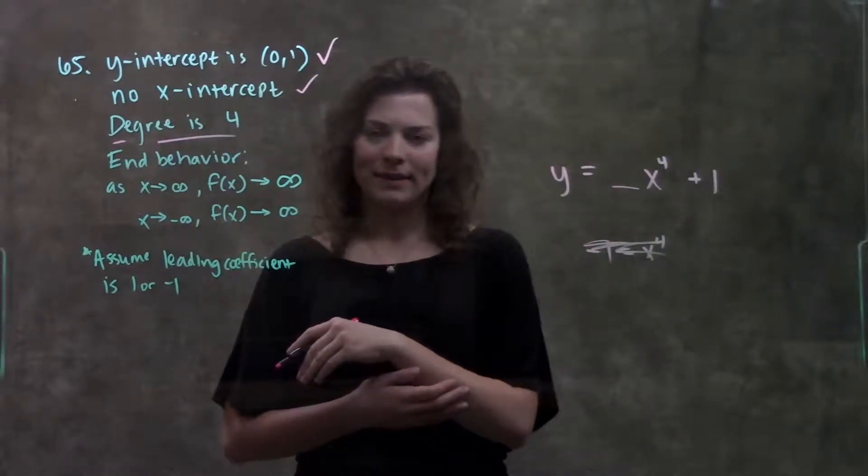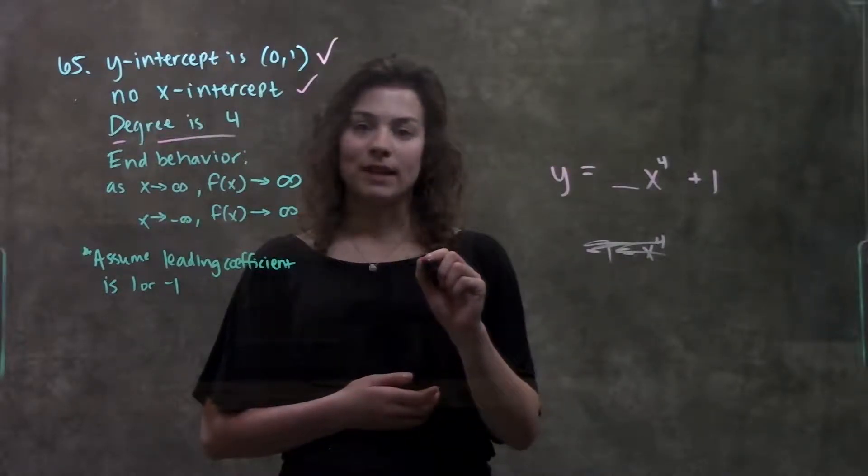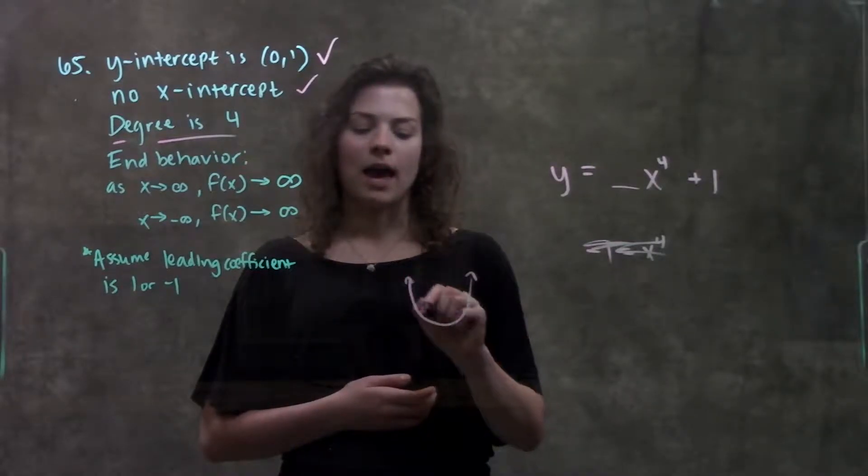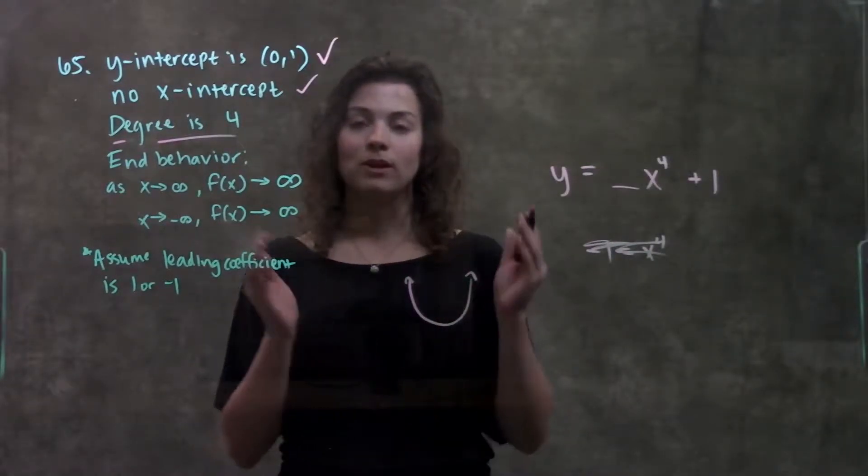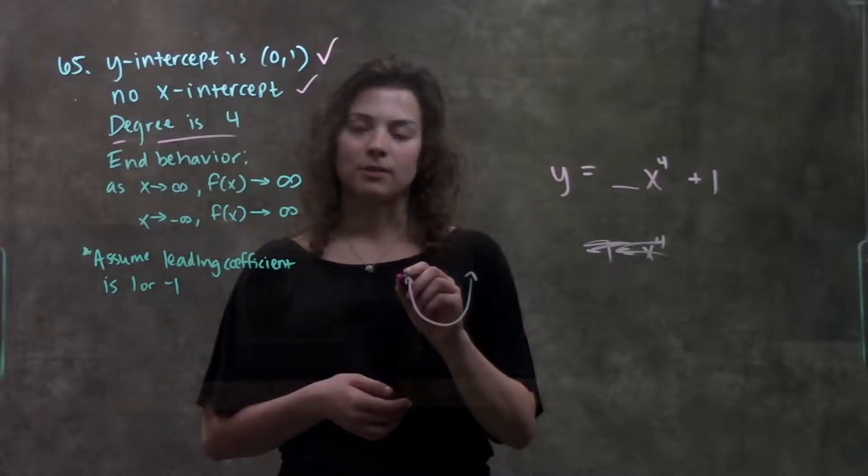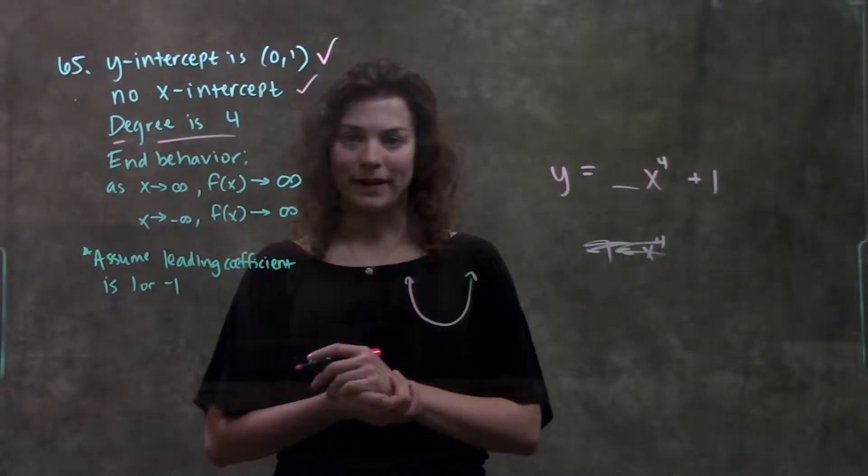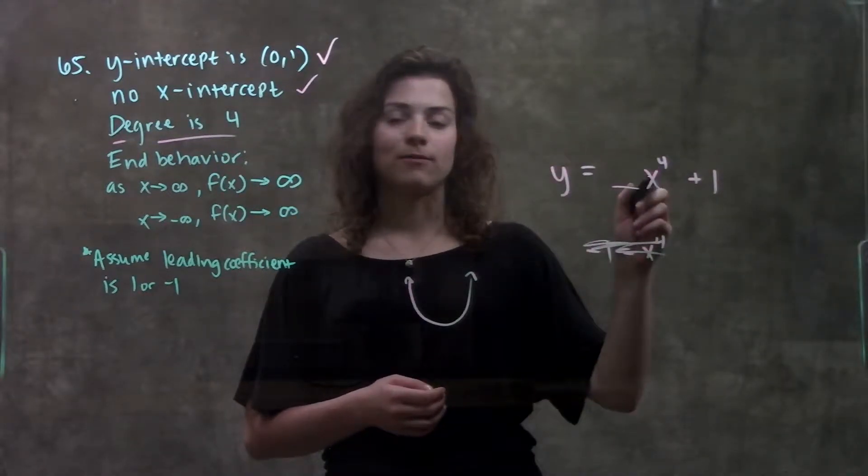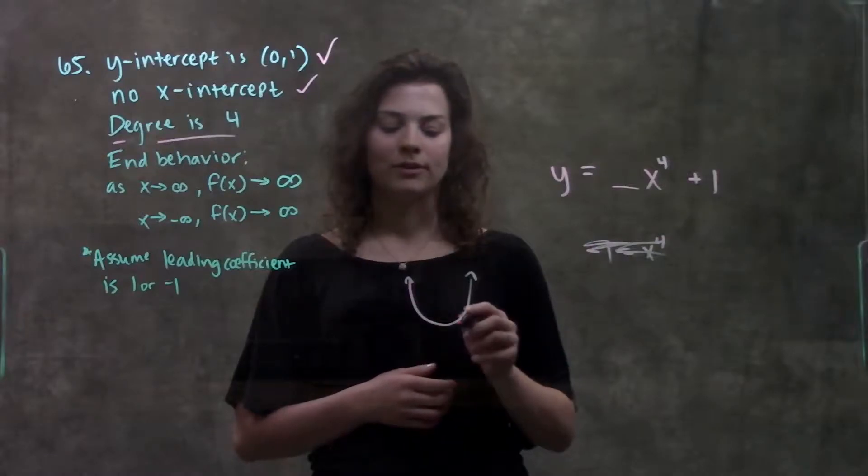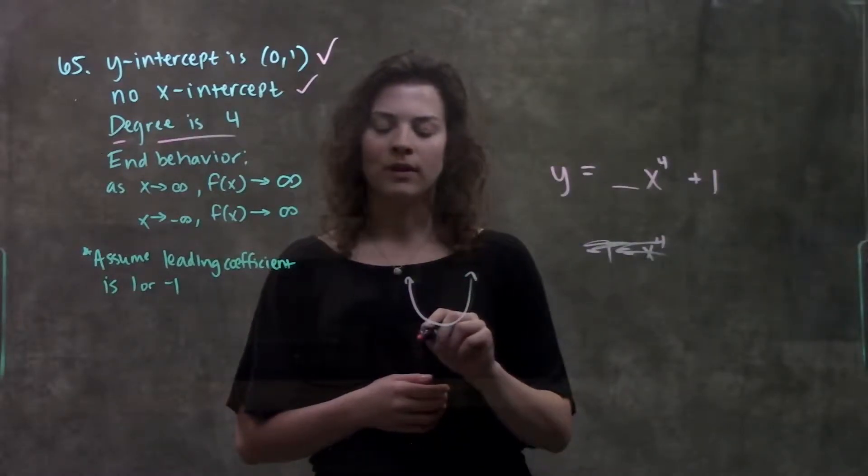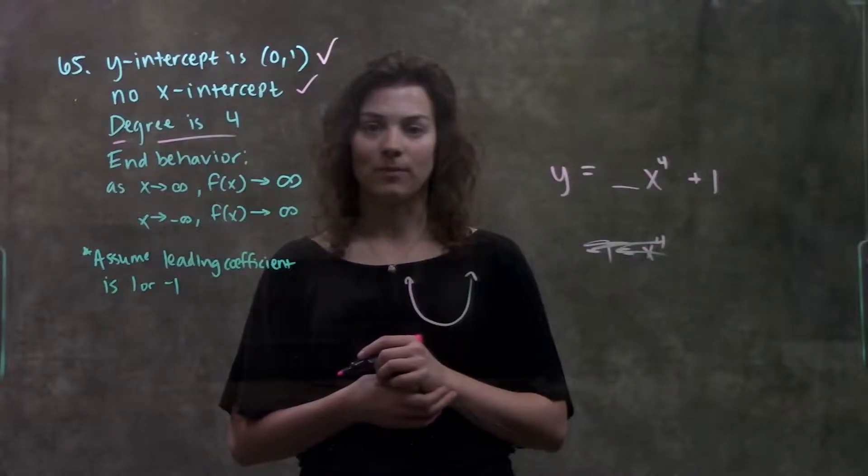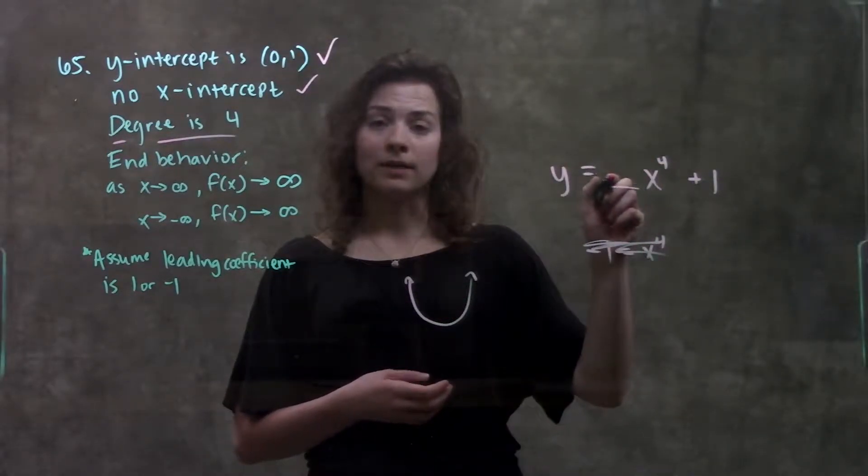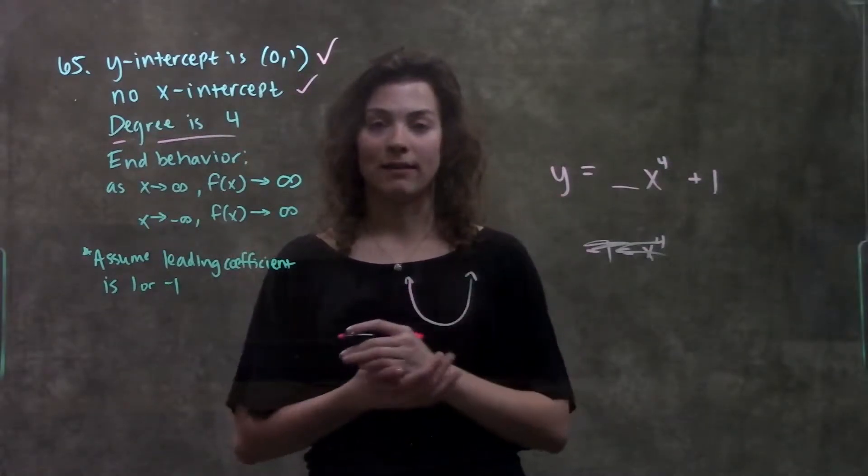If you remember back to that chart that they gave us in this section, they said that if we have an even power and a positive coefficient in front of it, the end behavior of the function will be going up to infinity, both as x approaches negative infinity and as it approaches positive infinity. Because think about it, no matter what value I plug in for x here, when it's raised to the 4th, it will become positive. 2 to the 4th will be some positive value. Negative 2 to the 4th will also be some positive value. So, if I have something raised to the 4th times a positive number, my end behavior will always be approaching infinity.